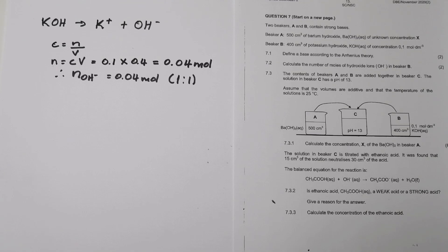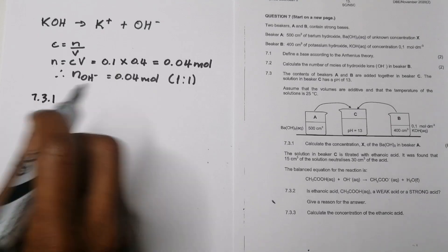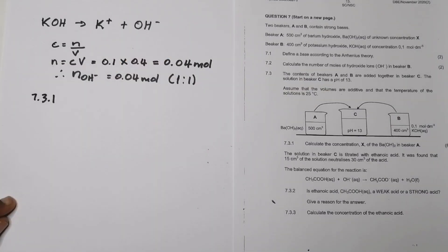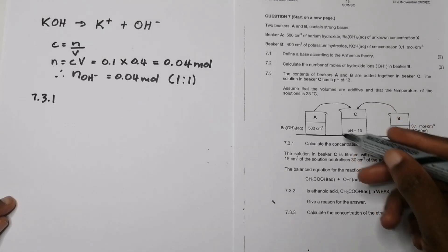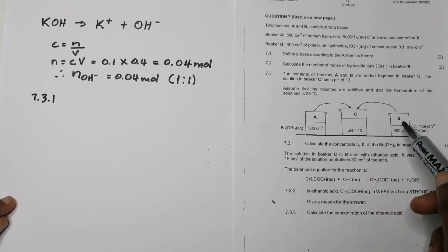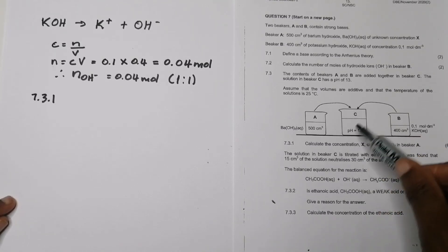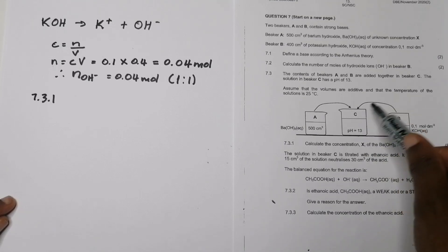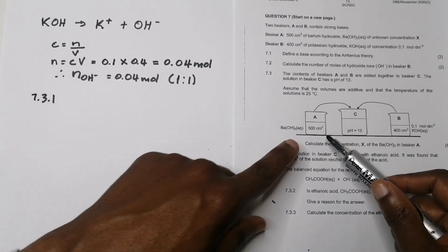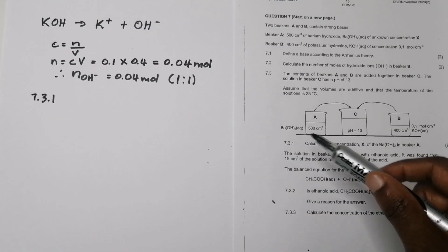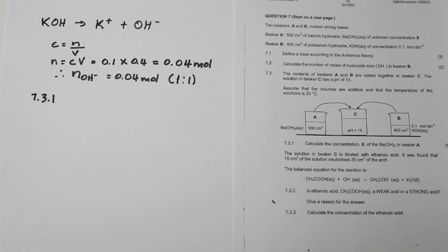We need to calculate the concentration x of barium hydroxide. The strategy is: since we know the pH of the combined solution, we can find the total moles of hydroxide ions in beaker C. We already know the moles supplied by beaker B (0.04 mol), so the difference gives us the moles from beaker A. Combined with its volume, we can find the concentration.